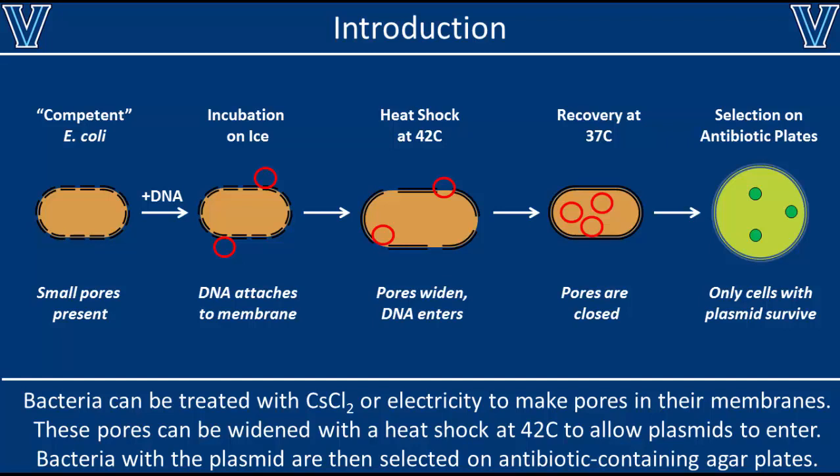We can then take these colonies and use them to inoculate larger-scale liquid cultures for DNA or protein production. In review, transformation is a straightforward process: you need competent bacterial cells with small pores in their membranes, you add your DNA and heat shock at 42°C to widen the pores, then let the cells recover at 37°C, and finally plate on antibiotic agar to select for only the cells that took up your plasmid.